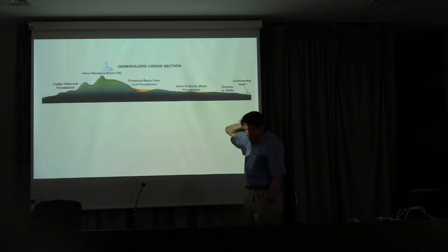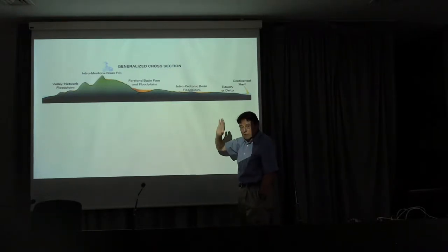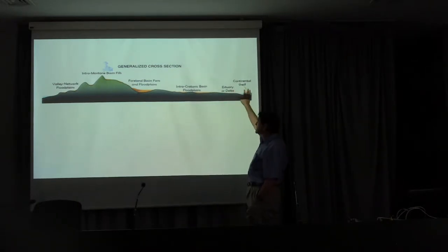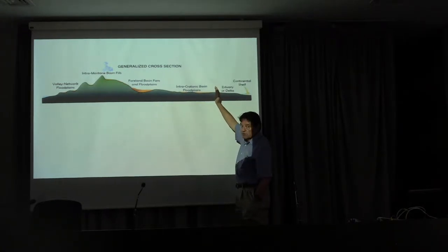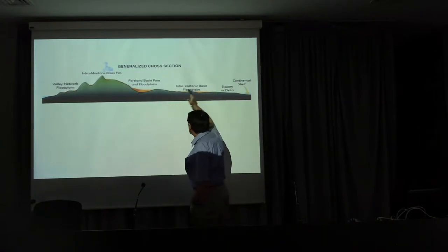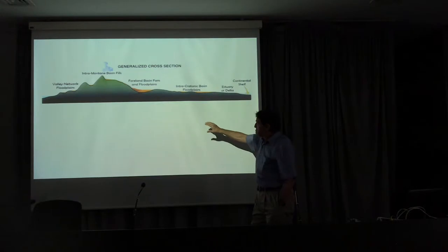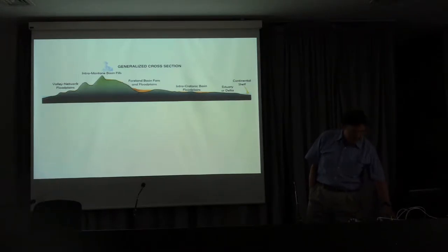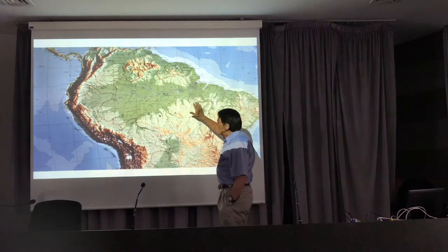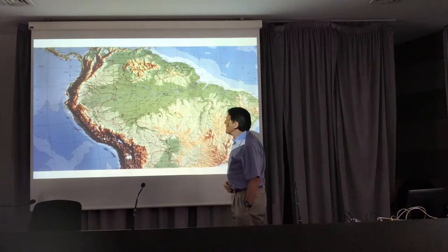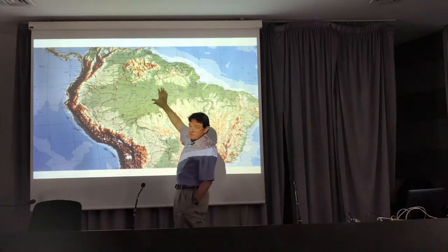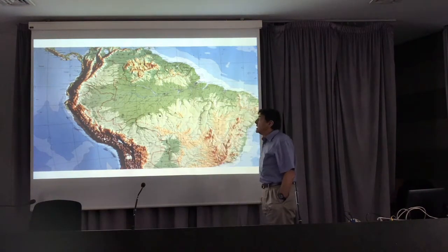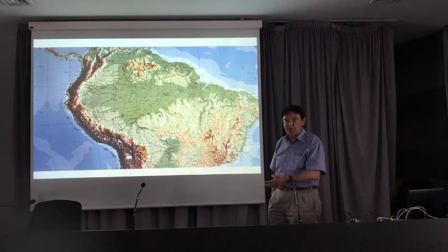I'll talk mainly about this portion of the problem today, from the origin to tidewater. When I initially got asked to get involved in this a long time ago on the Amazon, which is a sort of archetypal example of this problem, there was a lot of concern about the storage not only of sediment but of carbon in the tropical river floodplains. That was the original motivating issue — we were looking for the missing gigaton of carbon back in those days.